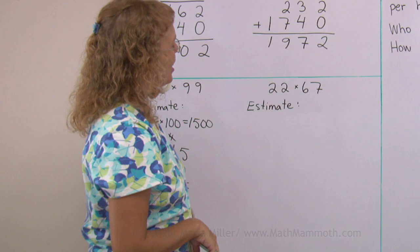One more. 22 times 67. Estimate. I'm going to round this down to 20 and that to 70. So that's going to be 1400.